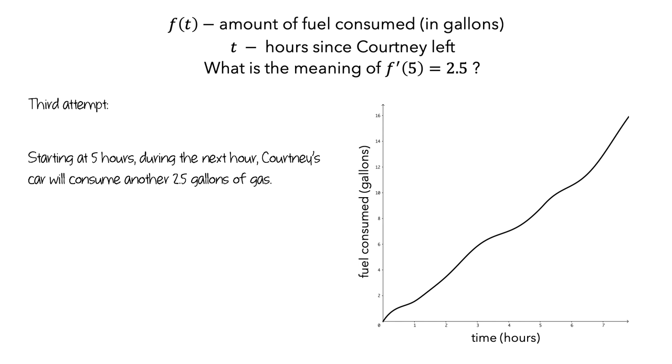But if we think about what this means on the graph, it's saying that starting at t equals 5 hours, over the next hour, the amount of fuel consumed will go up by 2.5 gallons. And this doesn't match the graph because it's describing the average rate of fuel consumption from t equals 5 to t equals 6 hours. And we don't know how Courtney drove over that hour-long interval. Now, we want to describe an instantaneous rate at t equals 5 hours. Since this attempt was better than the previous one, let's see if we can work with it to make it more precise.